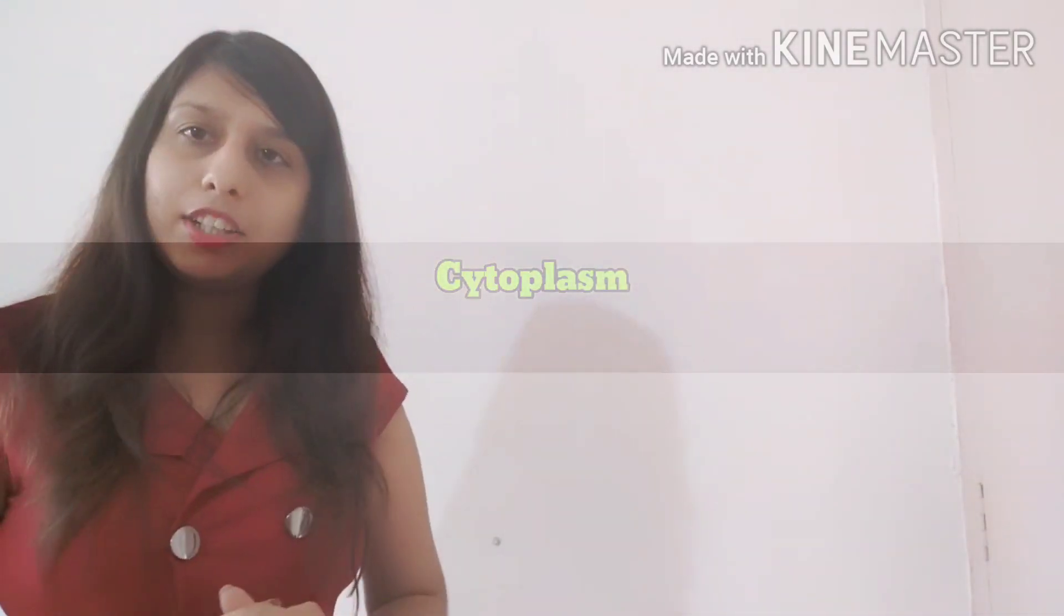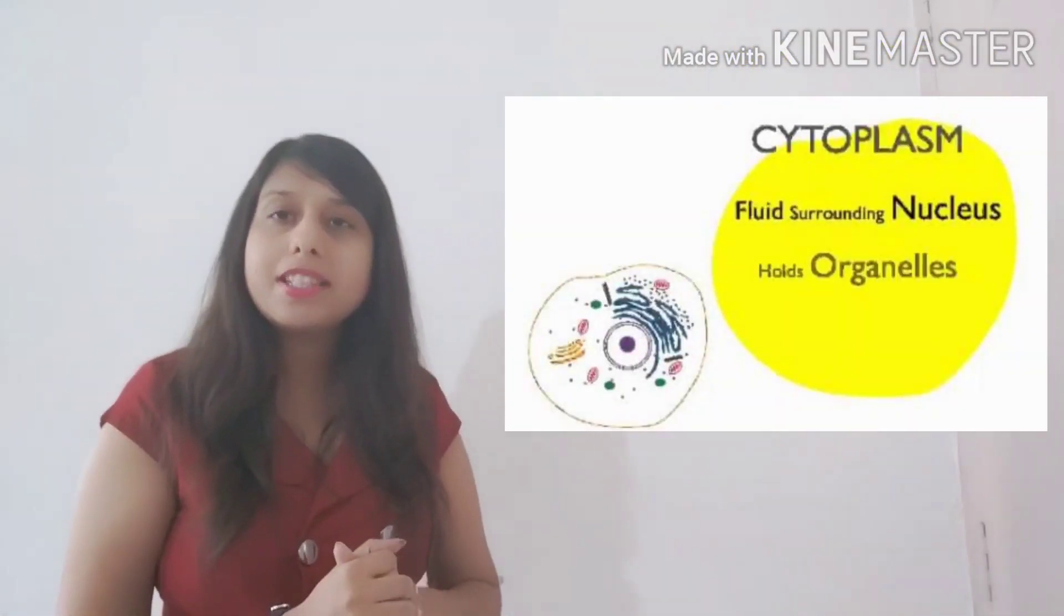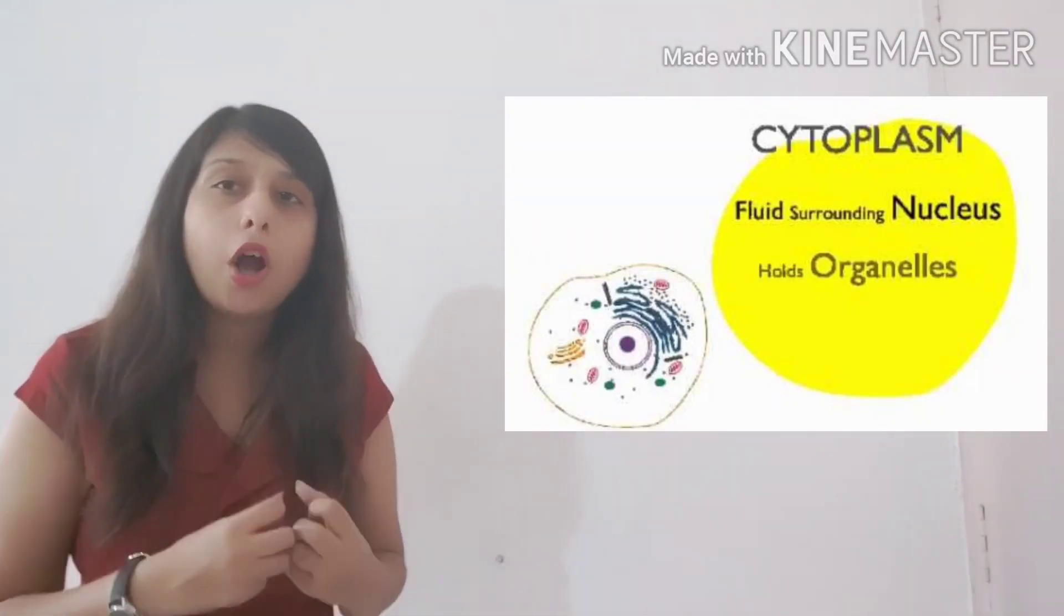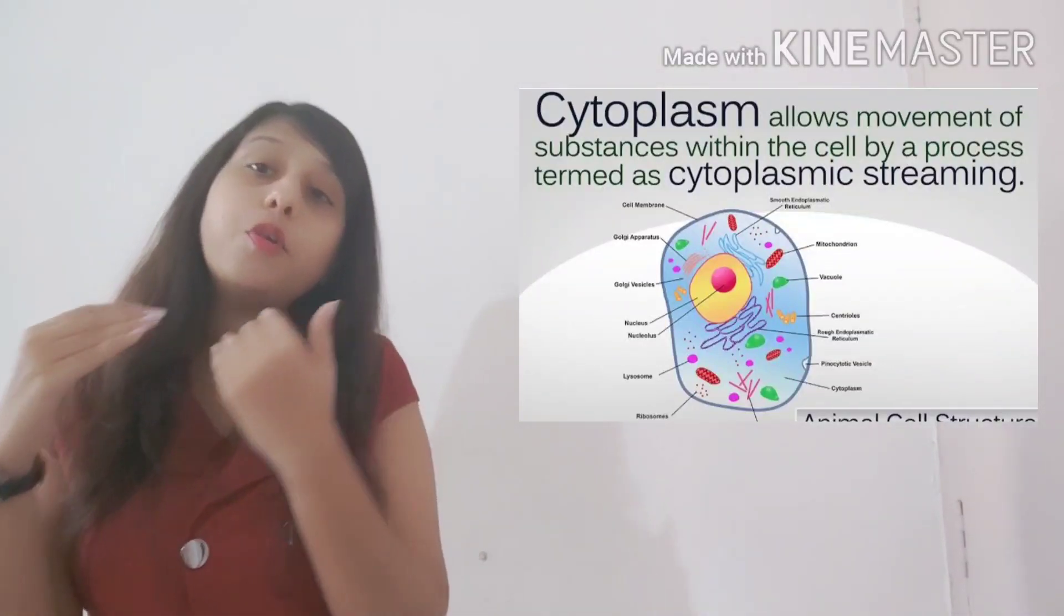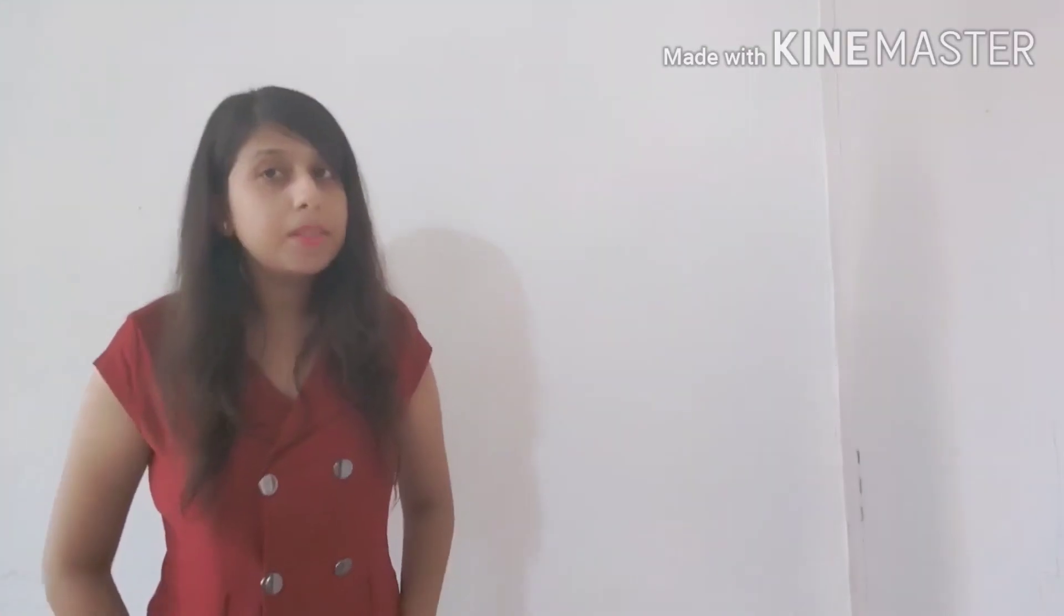Next, we are going to study cytoplasm. So what is cytoplasm? Cytoplasm is the jelly-like substance or jelly-like fluid which is present inside the cell. This cytoplasm helps all the other organelles to get embedded inside the cell and it also allows the movement of certain nutrients or certain organelles from going from one place to another. It is also the place where many chemical reactions take place. So cytoplasm is basically the medium in which all the organelles lie.